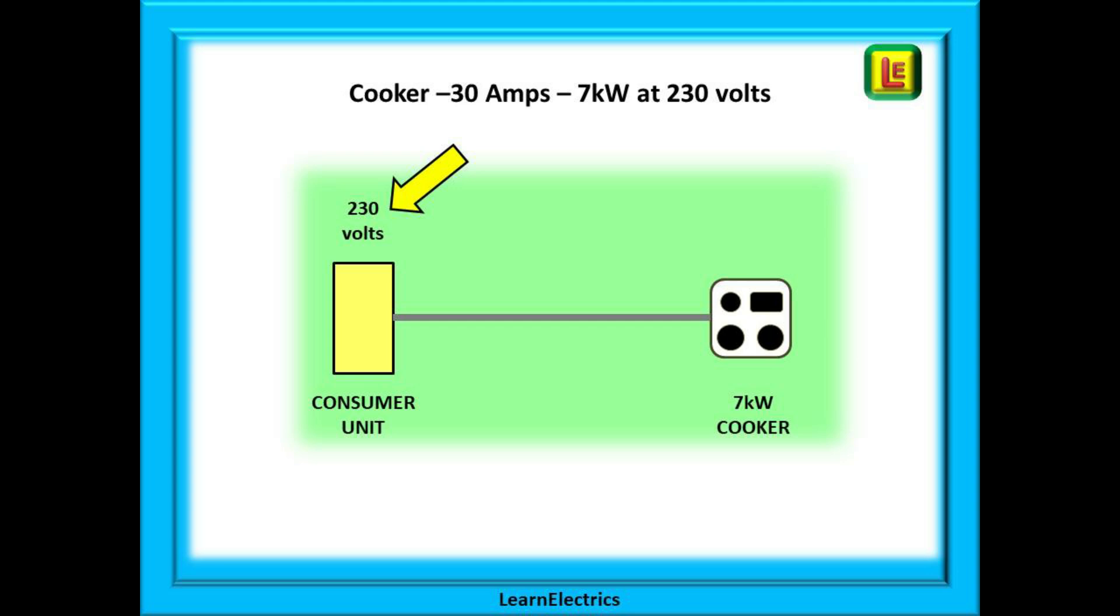A 230 volt seven kilowatt cooker will consume 30 amps of current at full load. But when fully loaded, when everything is turned on maybe at Christmas or for Sunday lunch, the voltage appearing at the cooker may only be 220 volts. This means that 10 volts has been lost in the cable. The 30 amps of current flowing along the cable means that up to 300 watts of power will be lost in the cable. First, 300 watts of power is going to warm the cable up, and secondly, someone has to pay for that 300 watts. It's not getting to the cooker, so it's lost energy to the customer, thrown away money.